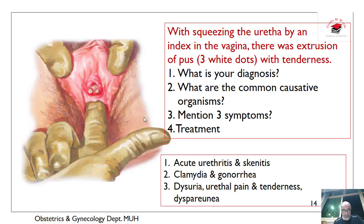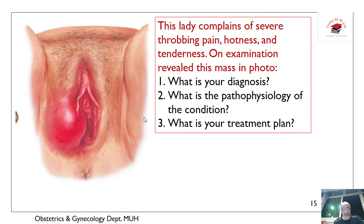Treatment of gonorrhea and chlamydia follows usual regimens. What about this? This is the site of Bartholin's gland — it is inflamed and tender on examination. This is Bartholinitis. The pathophysiology is obstruction of the Bartholin's gland duct. Treatment is antibiotics until the acute condition subsides, then marsupialization.